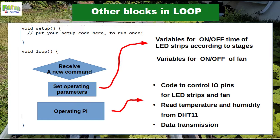I check for a new command from the smartphone every 0.5 seconds. I update operating parameters whenever I receive a new command, and I operate the plant incubator according to the parameters. This includes reading temperature and humidity values from the DHT11 sensor, and switching the LED light strip and fan.